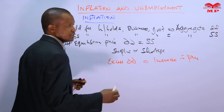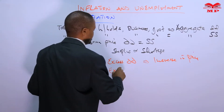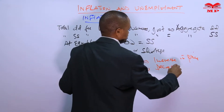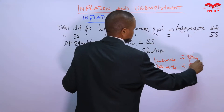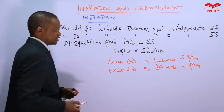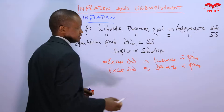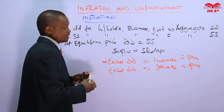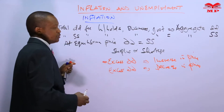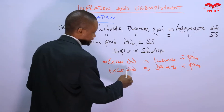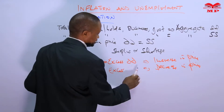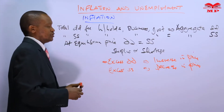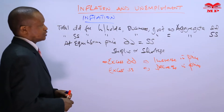Where there is excess demand, there will be upward pressure on price, leading to an increase in price. Where there is excess supply, suppliers will be under pressure to reduce the price, leading to a decrease in price. In the case of excess supply, suppliers may be forced to lower the price so as to attract customers to buy.